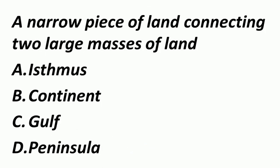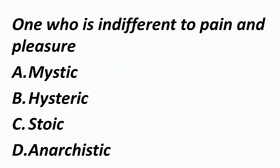A narrow piece of land connecting two large masses of land — मतलब दो बड़े-बड़े land हैं, उसको जो connect करेगा बीच में से, छोटा पतला सा land — उसको हम बोलते हैं Isthmus.